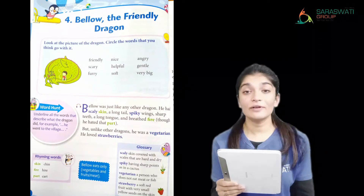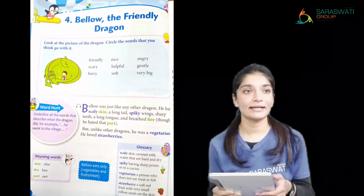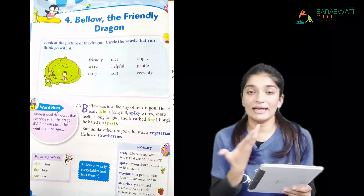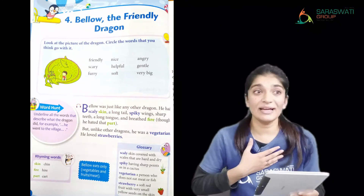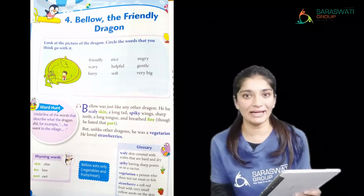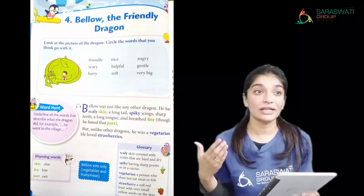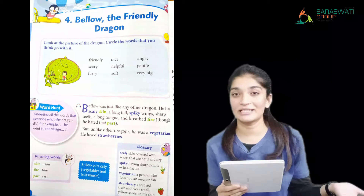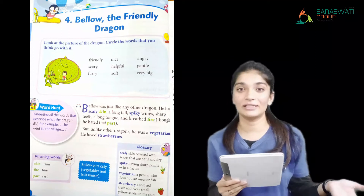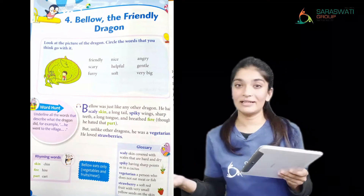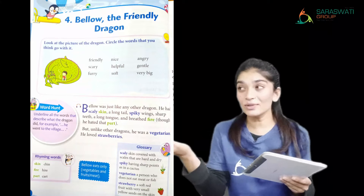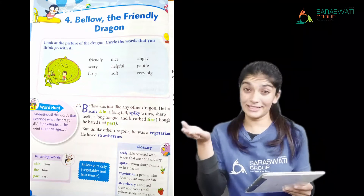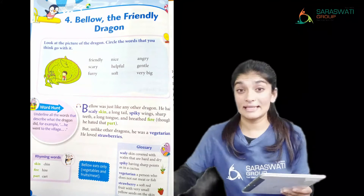The next word is 'excited' — felt very happy. When you feel really happy about something, that is excited. For example, 'I'm excited because we are going to go for a picnic this week.' When your school plans activities, you all feel a lot of excitement to participate — that feeling is called excited.